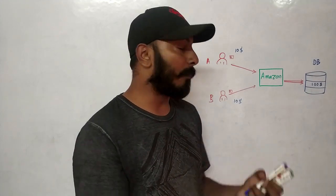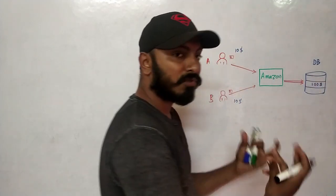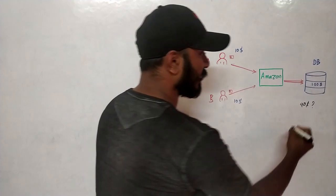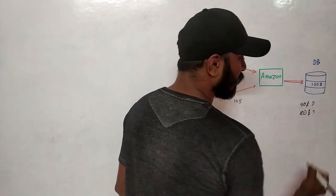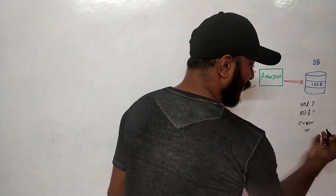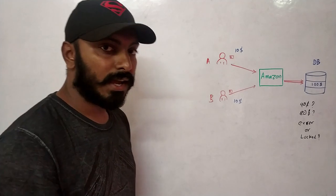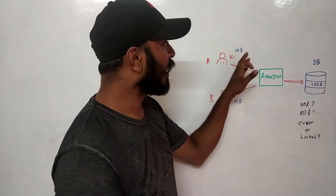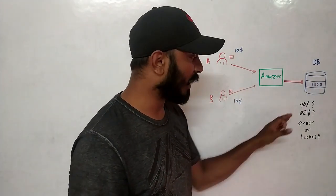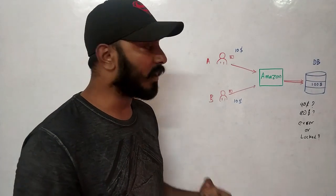What is expected to happen? When both requests go to the database and they both subtract $10, will the result be $90 or $80? Ideally, if two people each spend $10 from the same account, the balance in the database should be $80. If the balance is $90, that means there is a serious bug in the system.